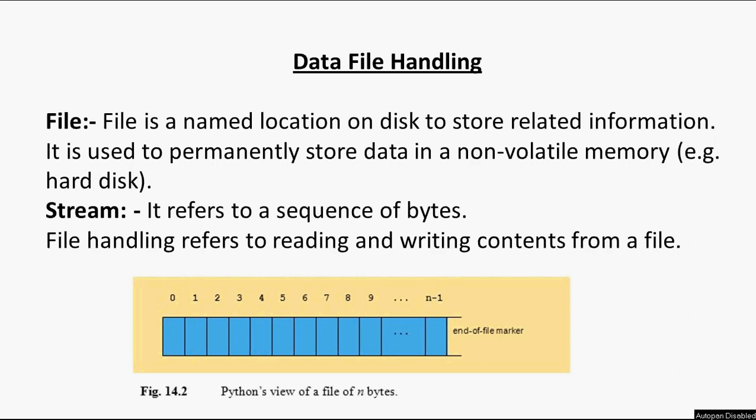Now we need to understand how a file is created, how something is written to a file, and how from an existing file we can read data from a Python program. But before dealing with that, let us understand the types of file in Python.